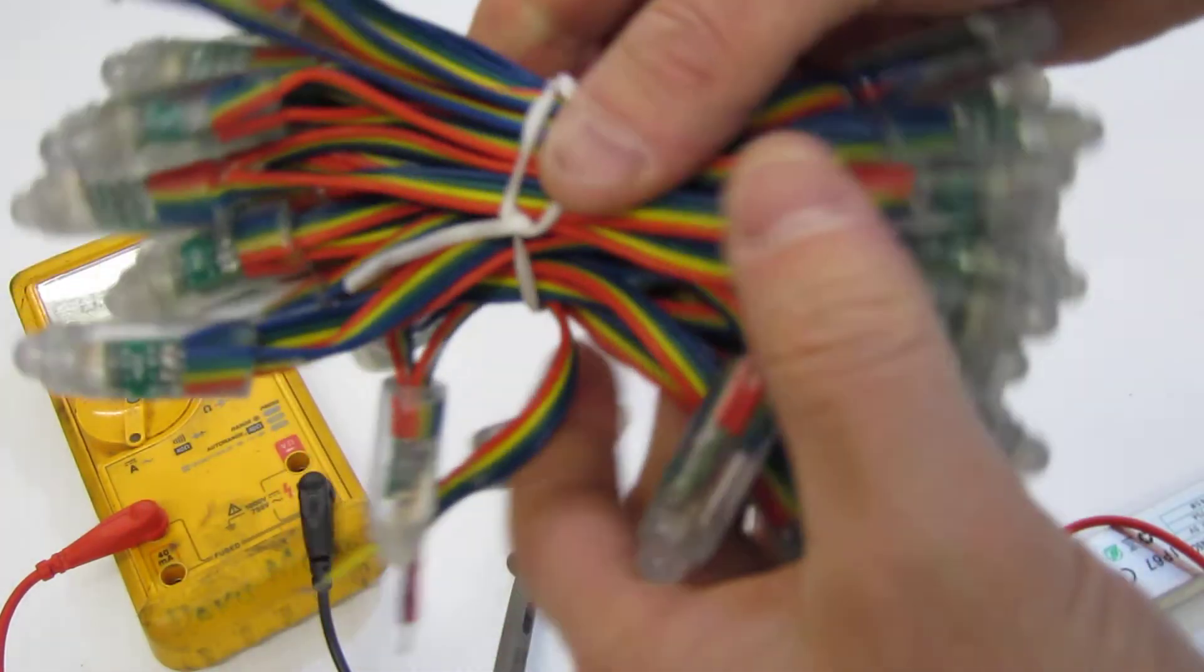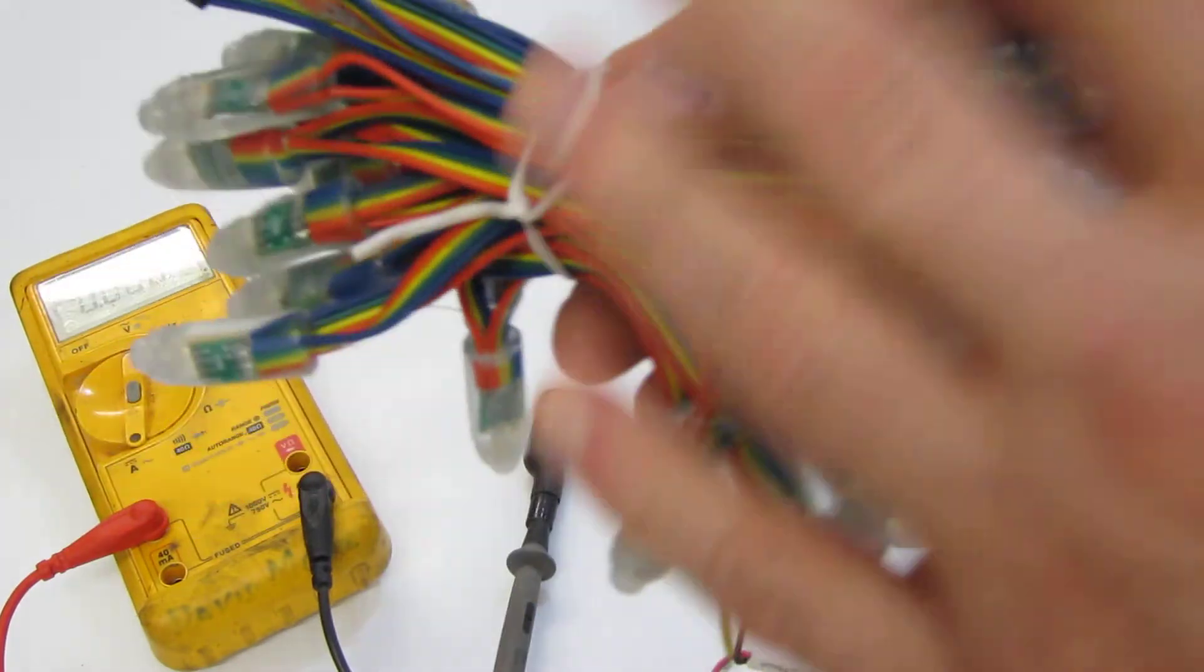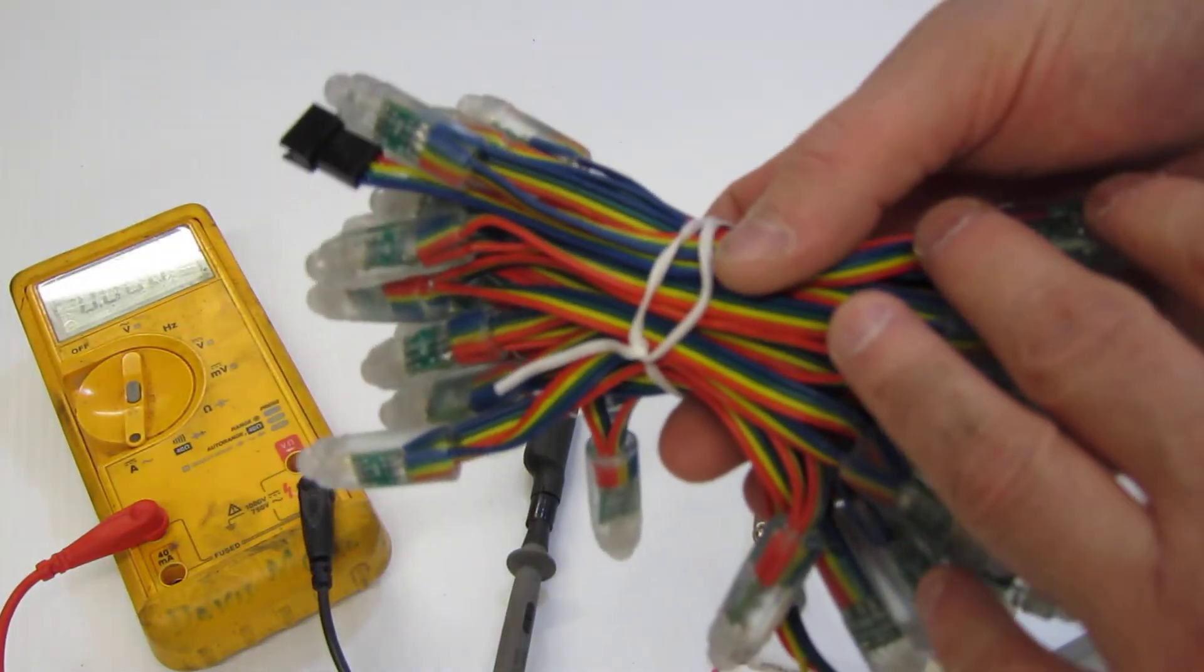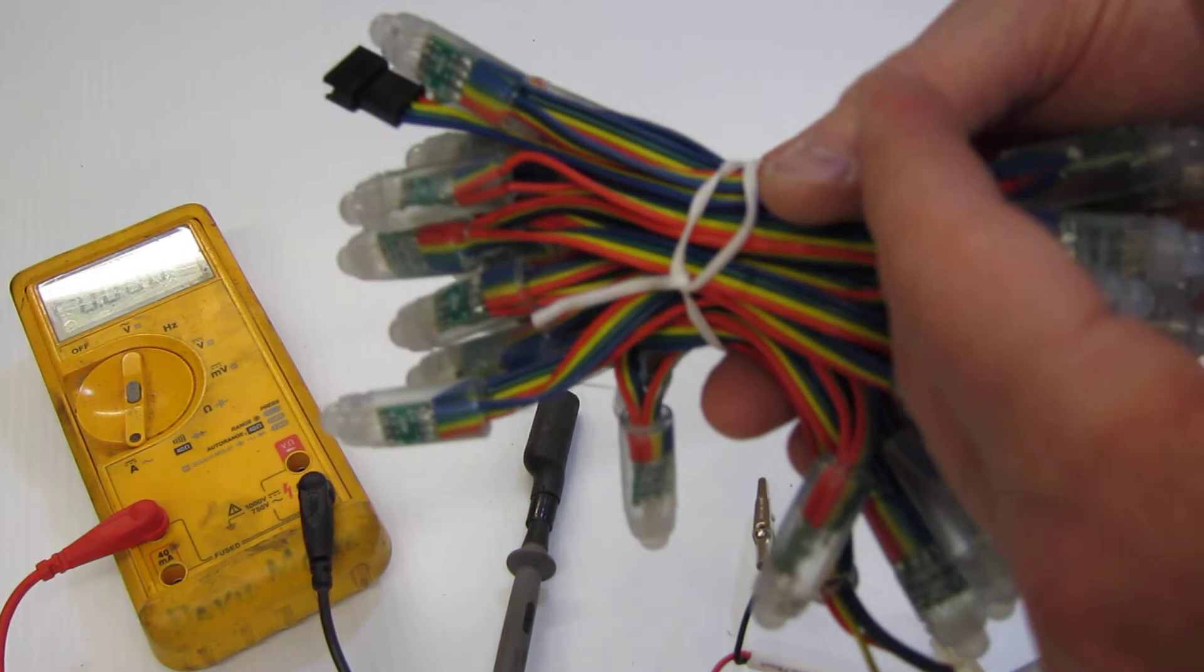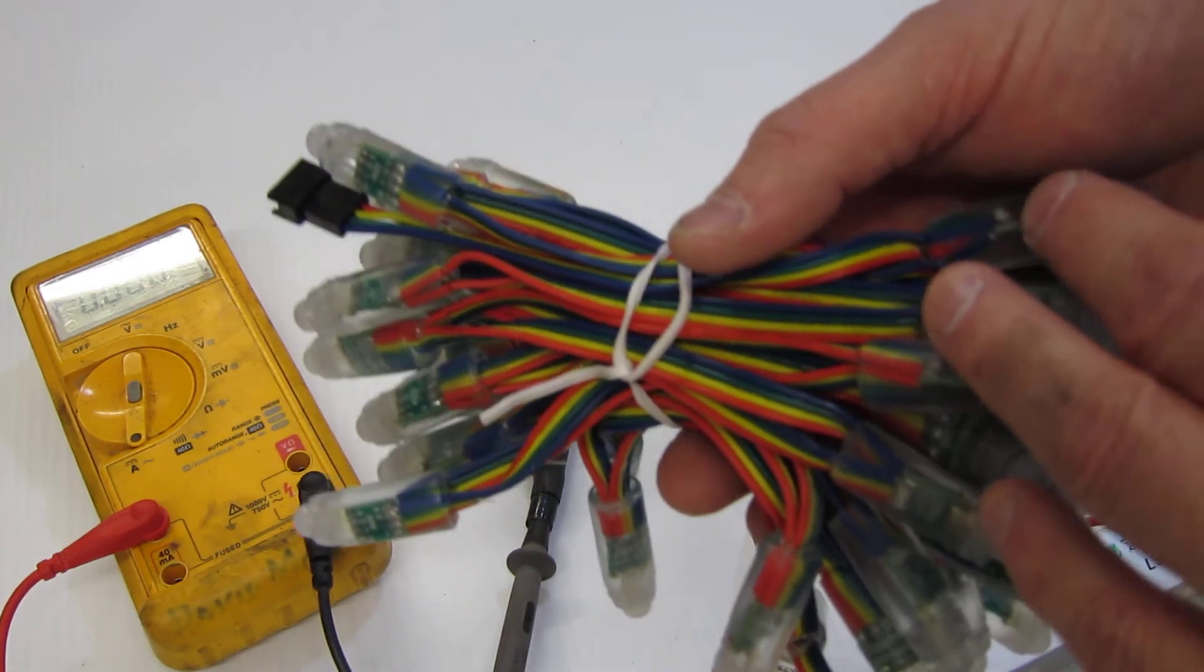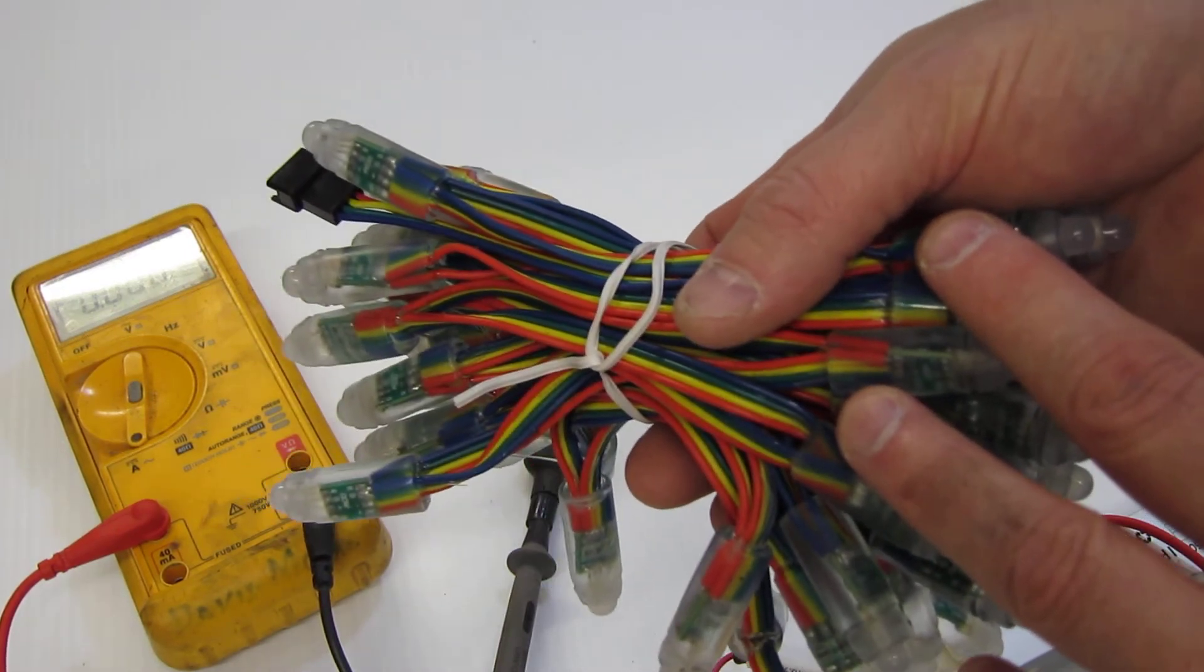When we're measuring RGB, we want to measure the maximum current. For example, if your controller's three channels and it controls up to six amps, that normally would indicate that it handles two amps per channel.